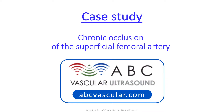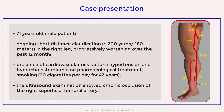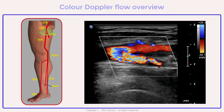Welcome to this ABC Vascular Ultrasound case study on chronic occlusion of the superficial femoral artery. This is a case of a 71-year-old male patient with ongoing short-distance claudication, progressively worsening over the past 12 months. The ultrasound examination showed the presence of a segmental chronic occlusion of the mid superficial femoral artery.